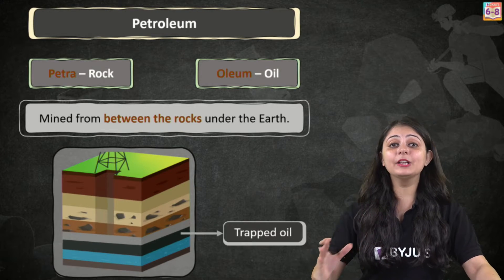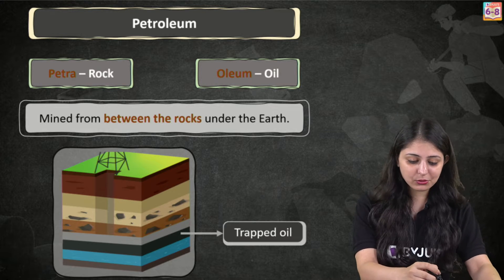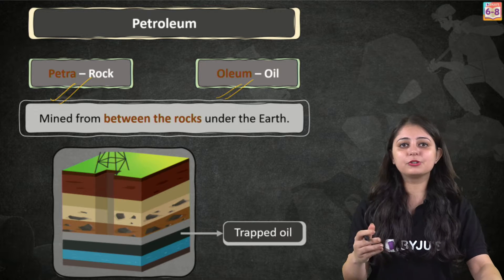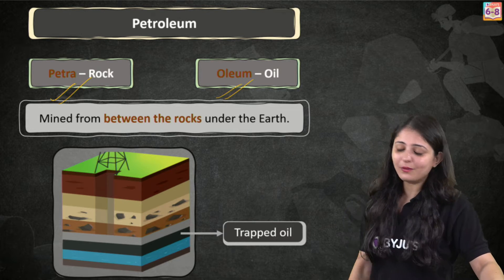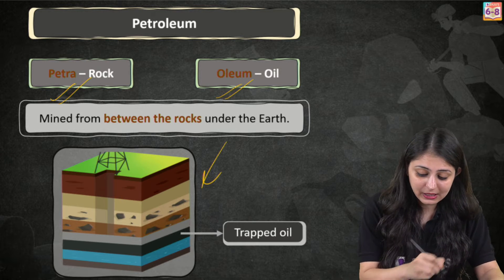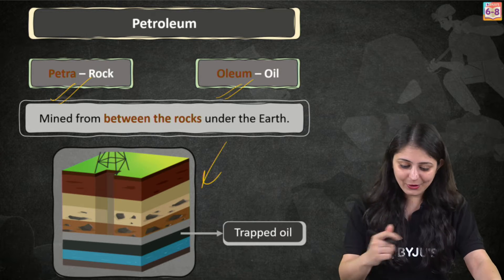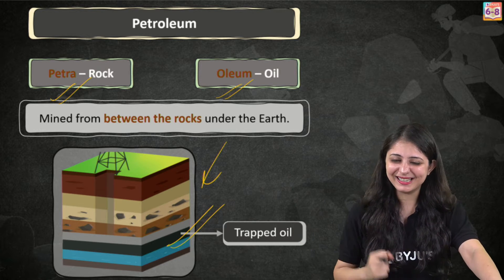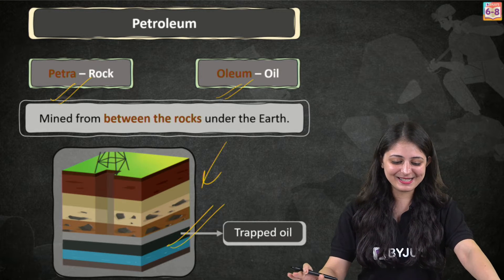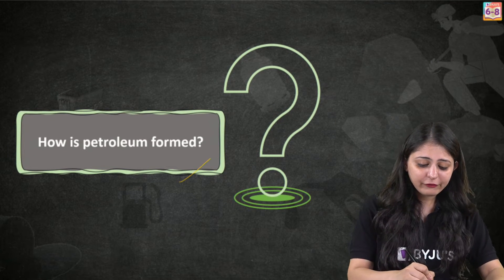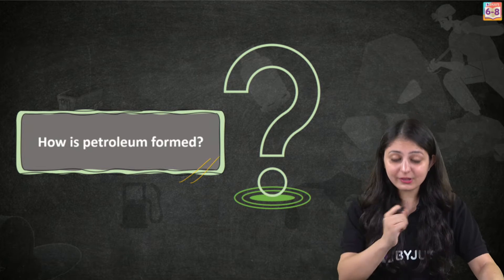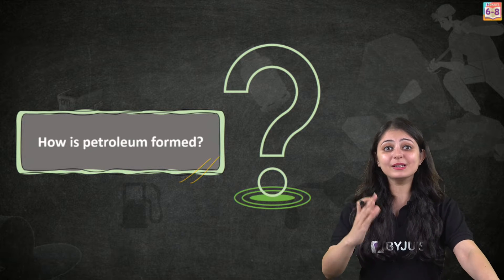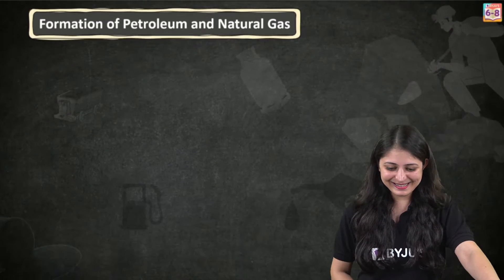Petroleum is a valuable natural resource. The word petroleum is derived from two words — petra and oleum — which means rock oil. Workers drill down to collect oil from reservoir rock traps. But the first important thing to know is: how is petroleum formed? We've seen the story of coal, but what's the story of petroleum?